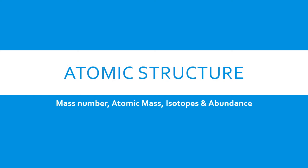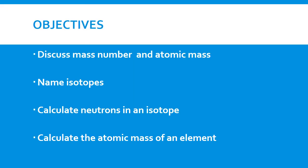Hello students, this is Mr. Courtney here. In this video we're continuing on atomic structure. We're going to look at mass number, atomic number, atomic mass, isotopes, and abundance. Our objectives will be to discuss mass number and atomic mass, name isotopes, calculate neutrons in an isotope, and calculate the atomic mass of an element.